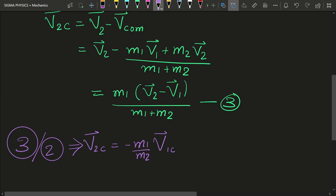What I want you to notice here is the negative sign. The negative sign implies that the velocity of m2 with respect to center of mass is always in the opposite direction of the velocity of m1 with respect to center of mass. And that is just mind-blowing.